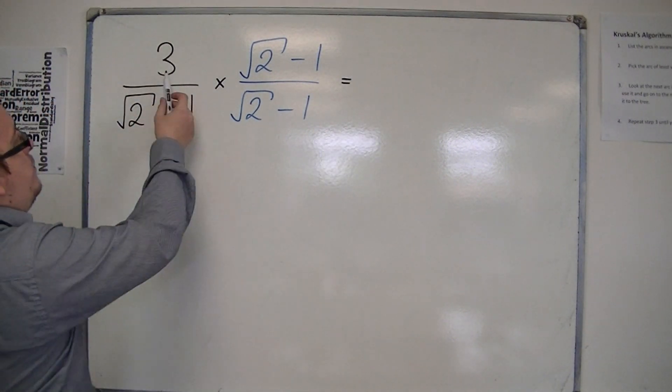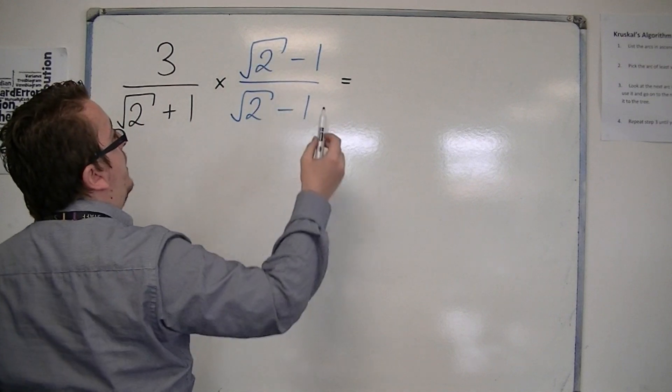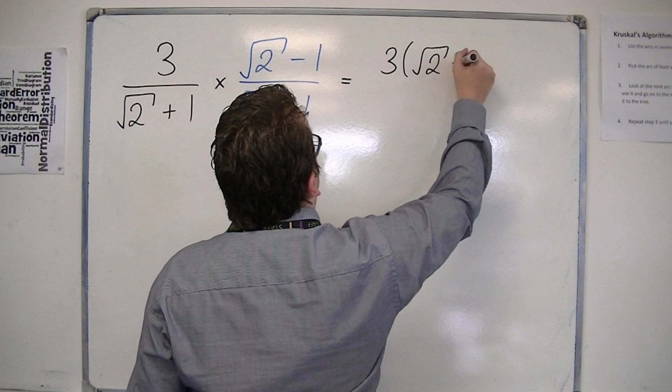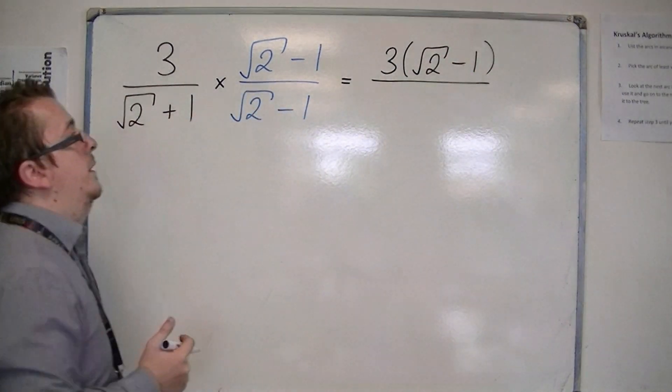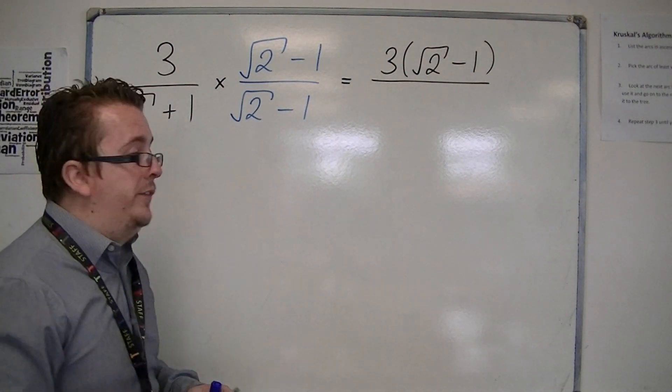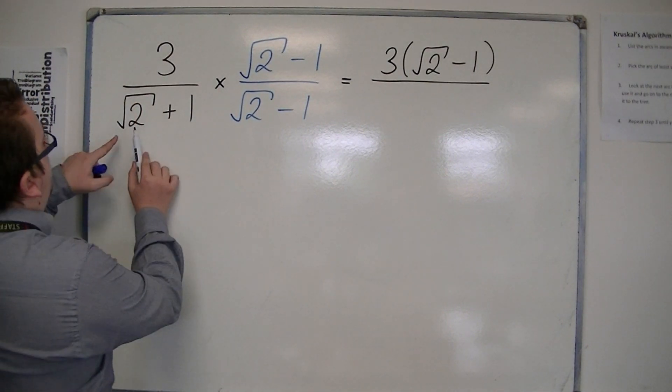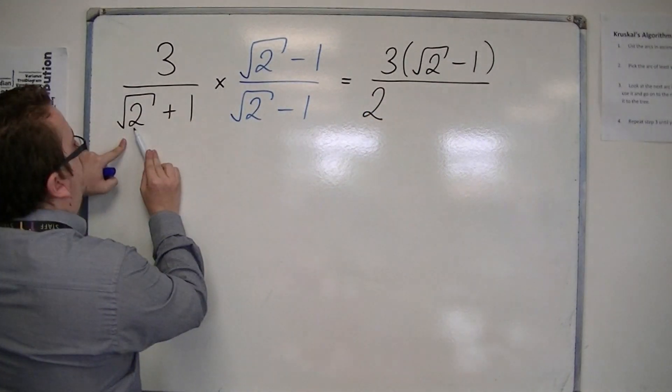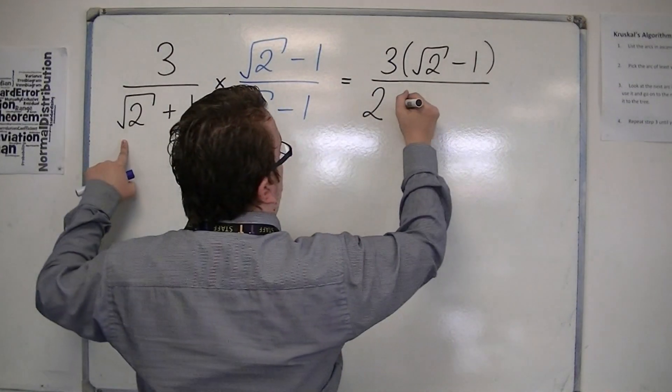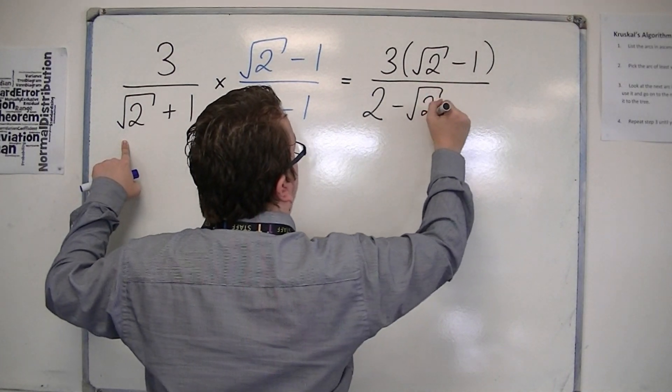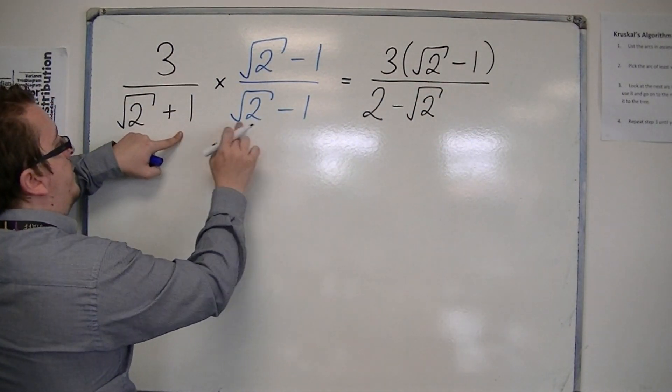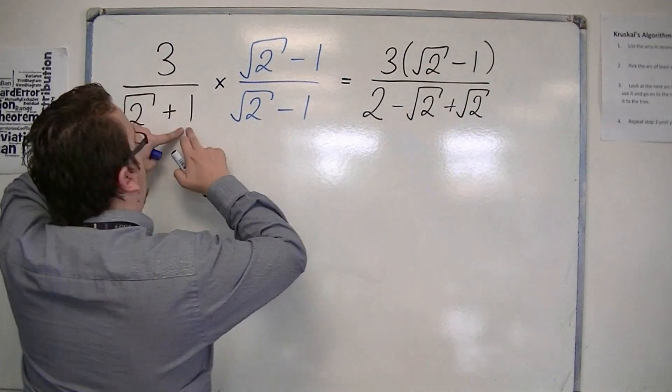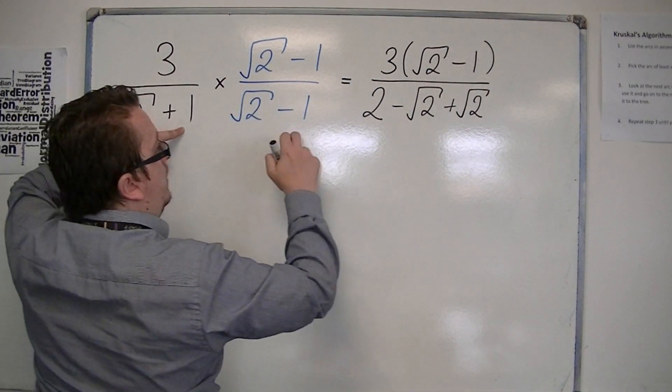So we have three lots of root 2 minus 1. For the moment I'm just going to write that as 3 times root 2 minus 1 in a bracket. Now the denominators, when they multiply, you have root 2 times root 2, so that's 2. You've got root 2 times minus 1, so that's minus root 2. You've got 1 times root 2, so that's plus root 2. And you've got 1 times minus 1, so that's minus 1.